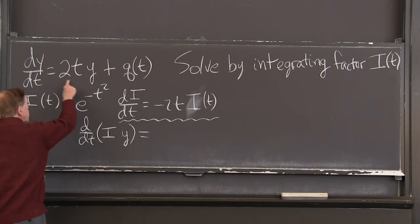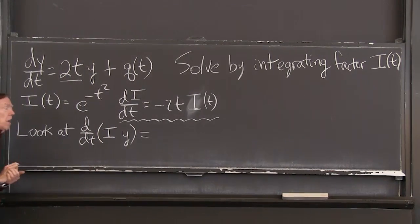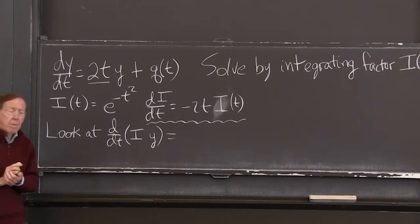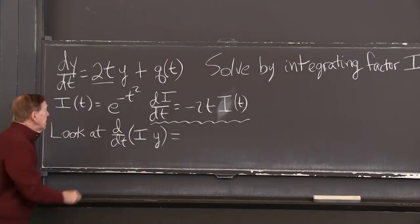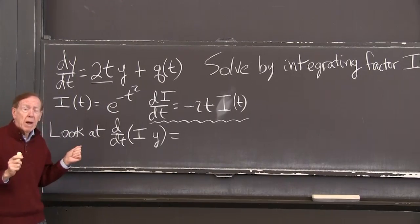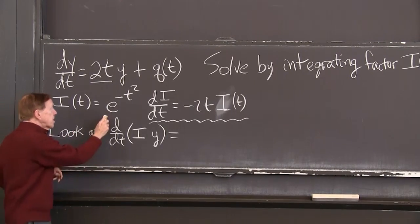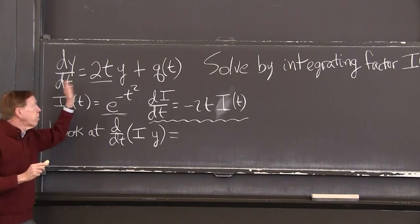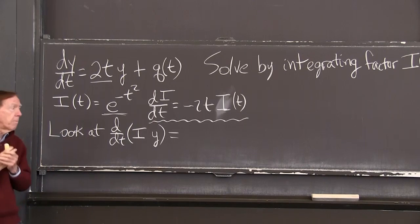Well, for this 2t problem, the right factor is e to the minus t squared. And why is that the right factor? This is the factor that I'm going to multiply the equation by and make it simple.